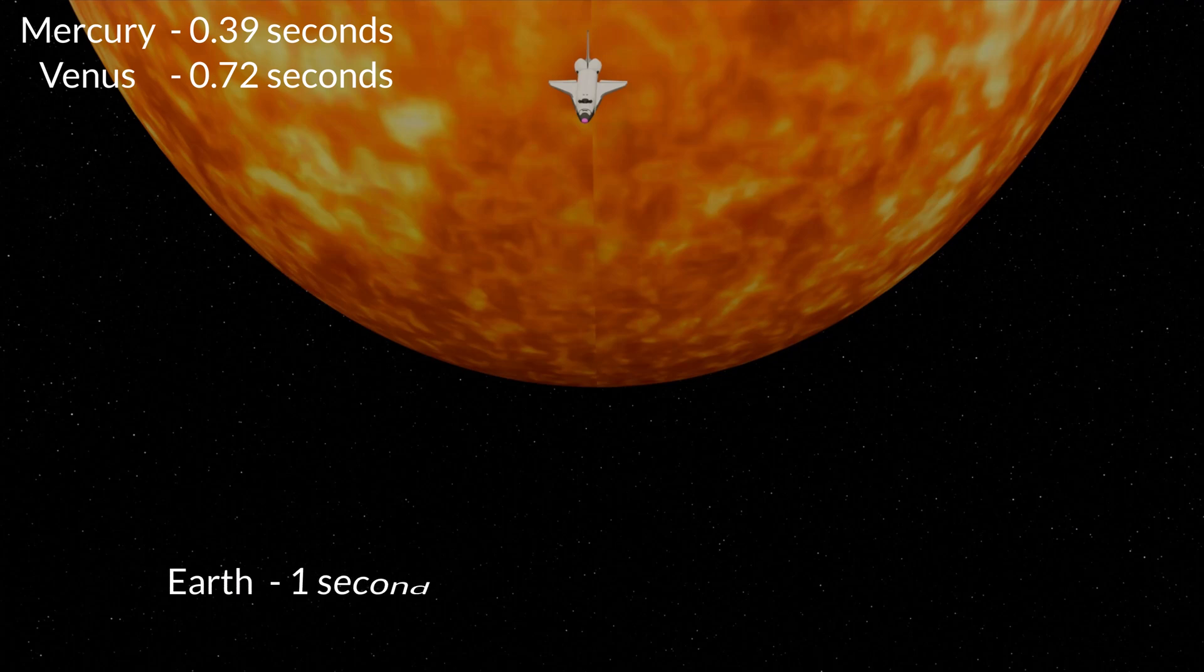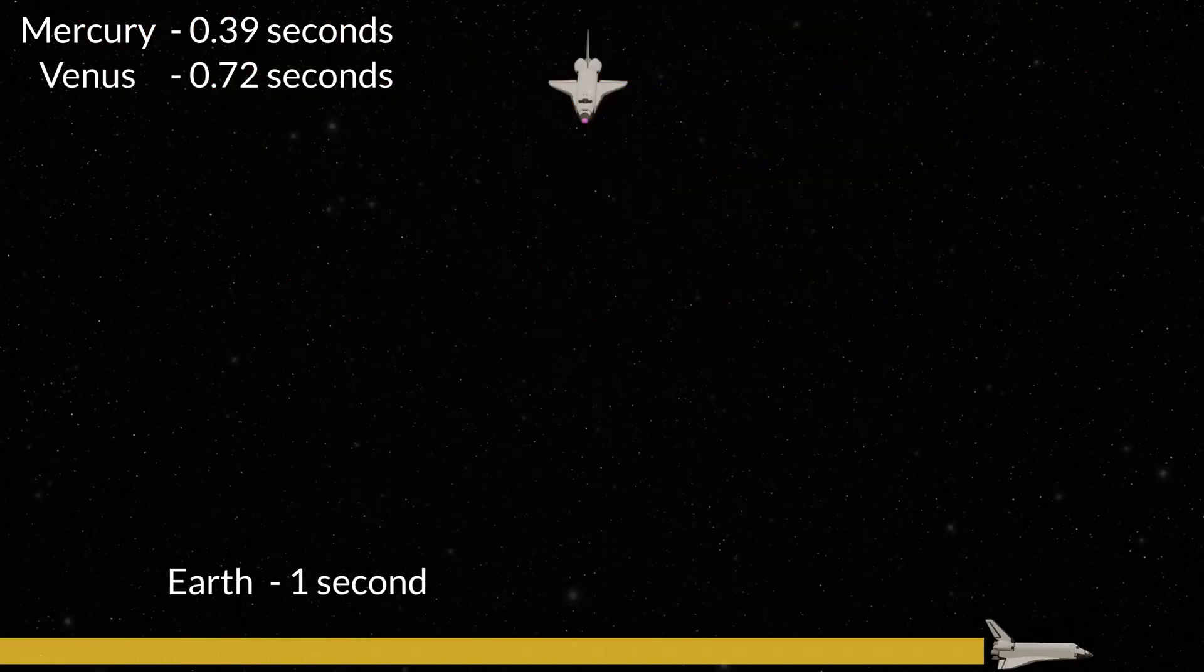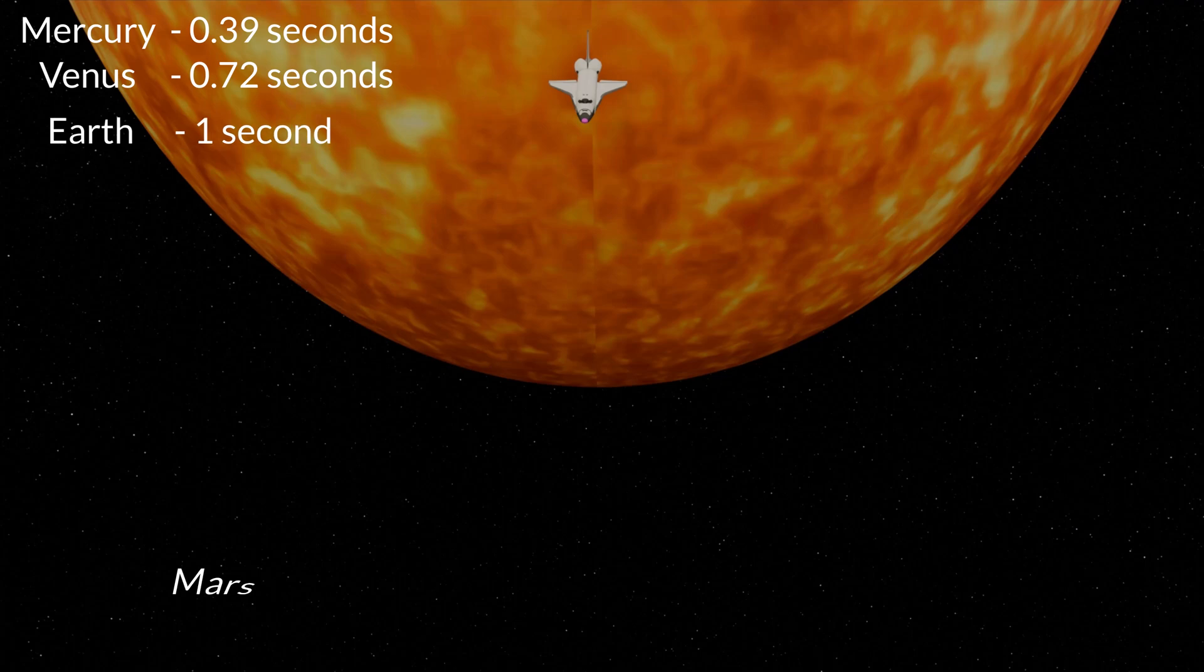Earth, as we already mentioned, would take one second to get to. After Earth, we have Mars, which would take 1.52 seconds to get to.